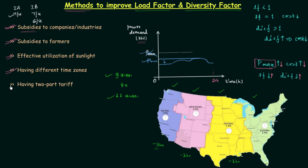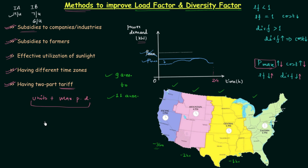The last method is having a two-part tariff. In this tariff, the first part is for the units the consumer is consuming and the second part is for the maximum power demand. So consumers are charged in two ways: for the units they consume and for their maximum power demand. There is also a tariff based on power factor — we provide subsidies to industries which use high power factor loads. We will discuss this in detail when we cover power factor. These are the different methods by which we can improve the load factor and diversity factor.